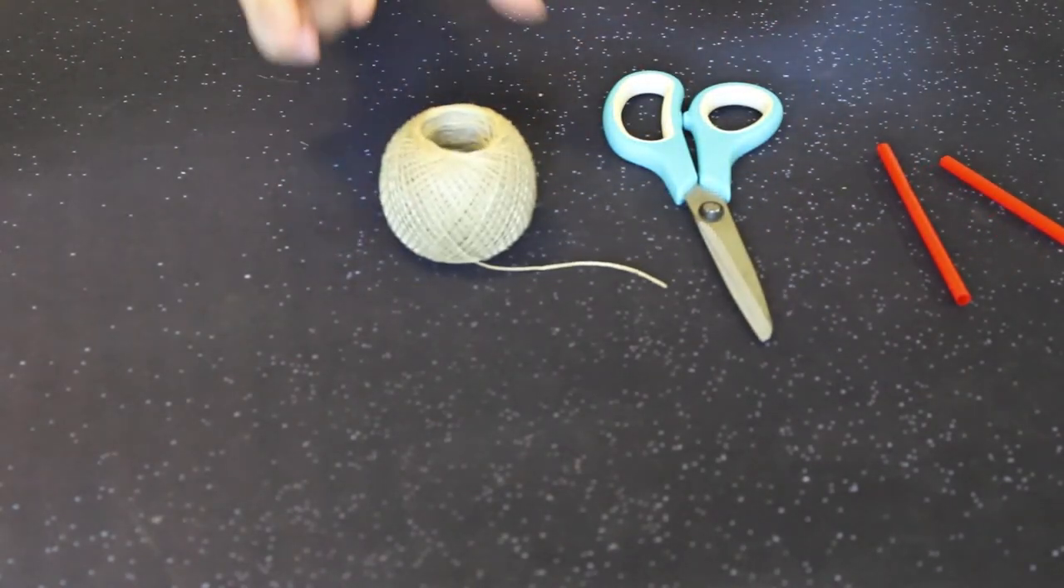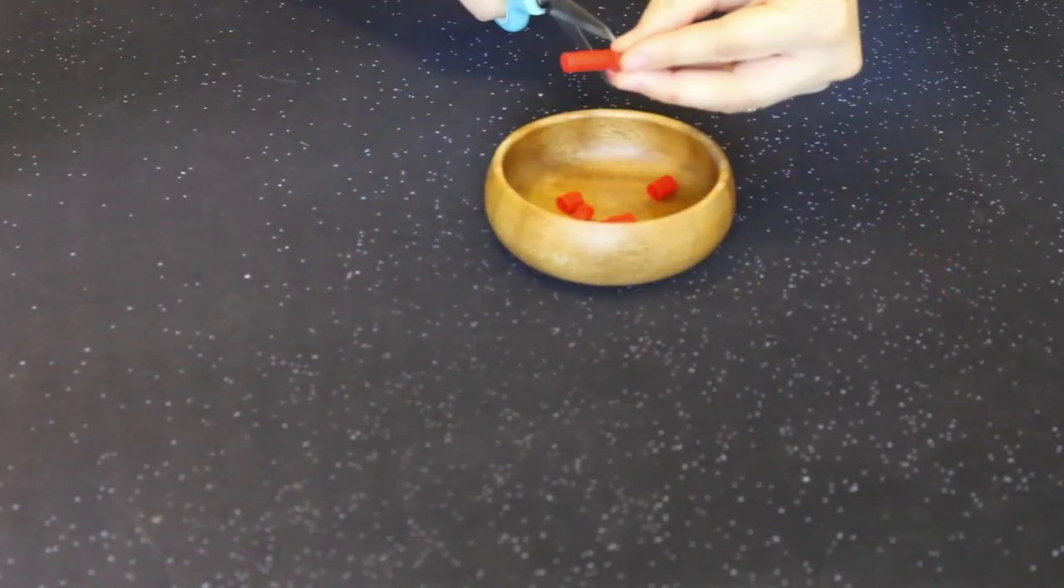The second option is for a bracelet and takes a little more dexterity and attention to detail. For this activity, you'll need a plastic straw. You can use one or more colors. You'll also need scissors and string. You may want to use a piece of tape or something to hook the end of the string to like a handle and clip. Start by cutting your straw into segments of equal length. You can make them small, like mine, or longer if you want a wider bracelet.